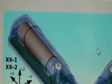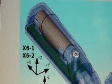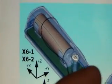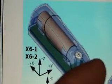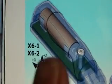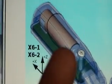Positive X behind the unit, positive Y to the left of the unit, and positive Z straight up and down.